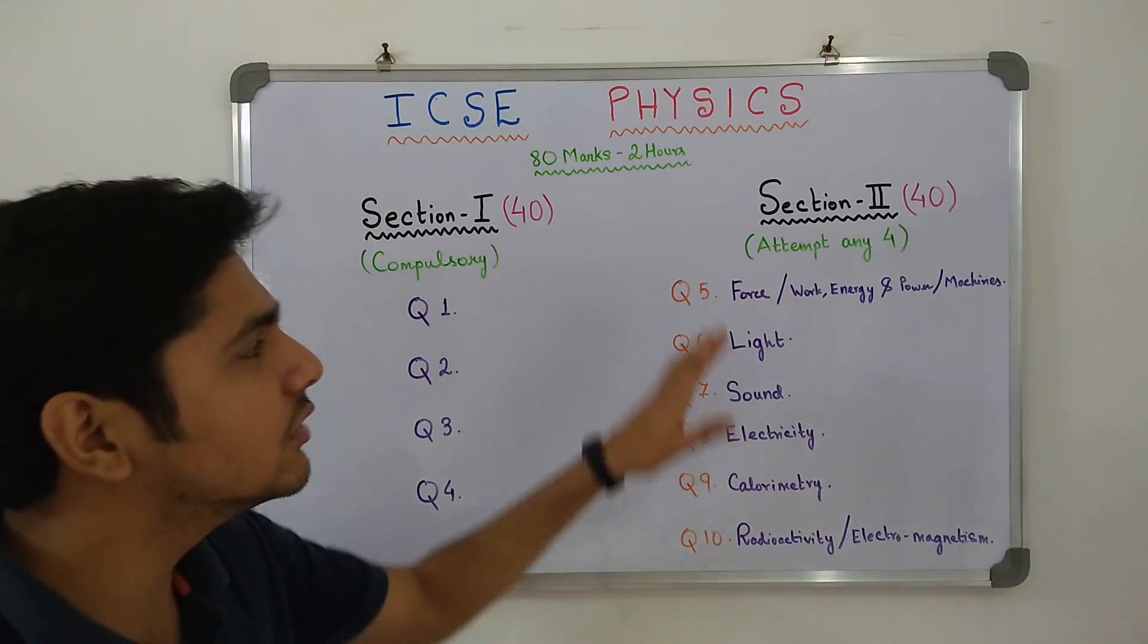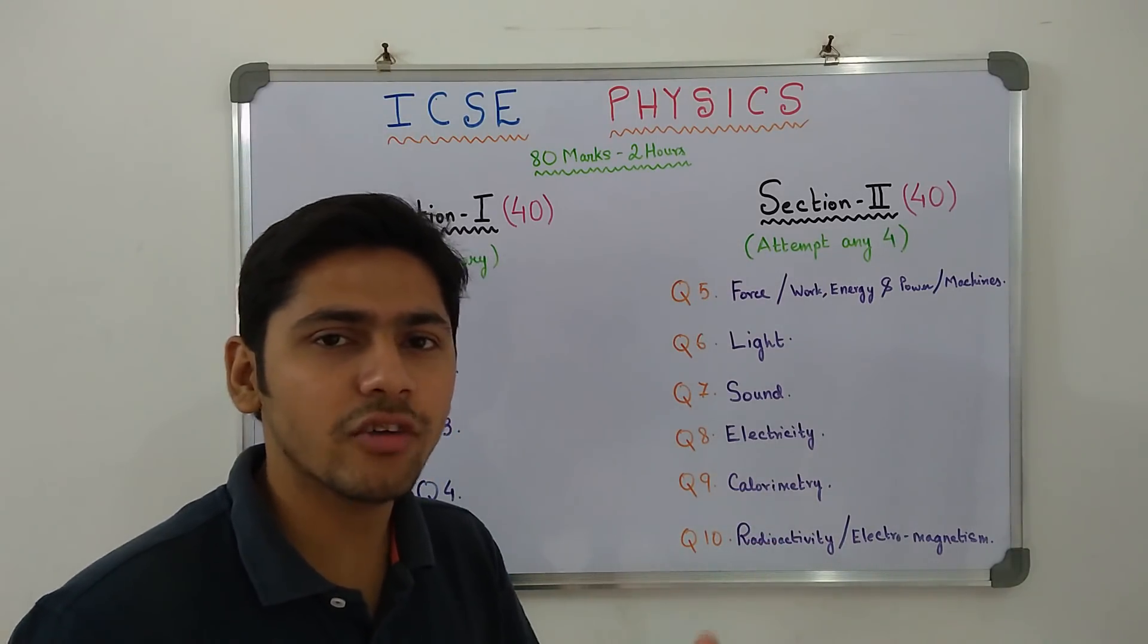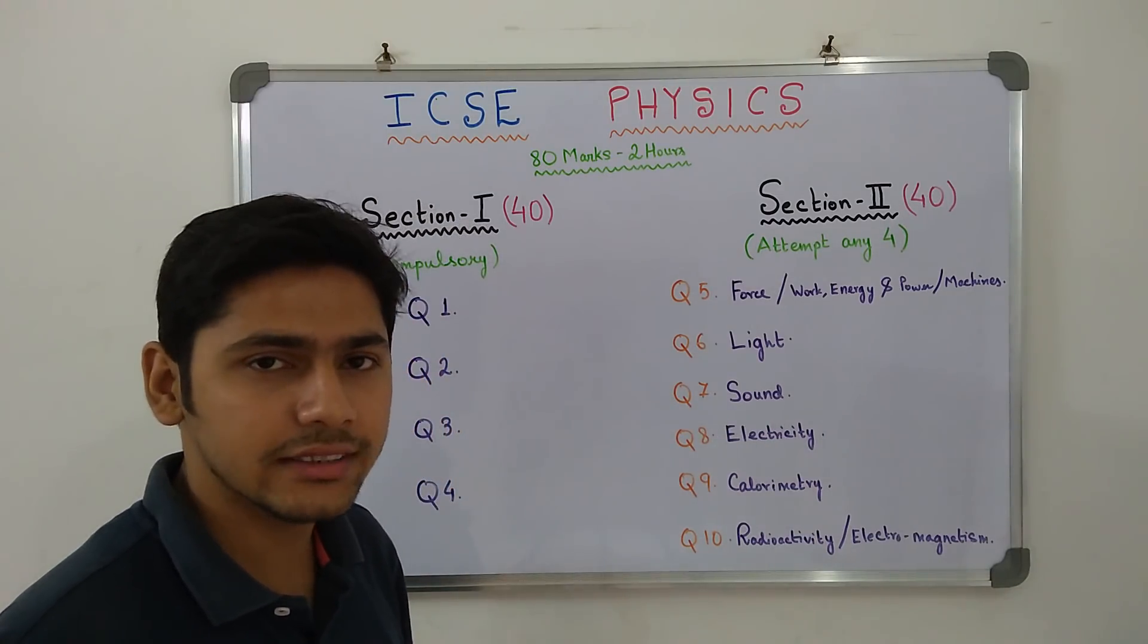Moving on to section 2. This is also 40 marks section and you have to attempt any 4 questions out of the 6 that you get. In this section, there is a chapter combination. What is that?